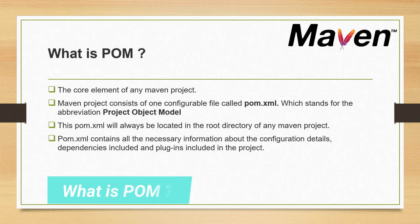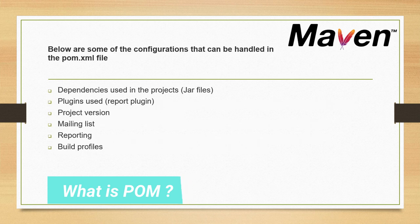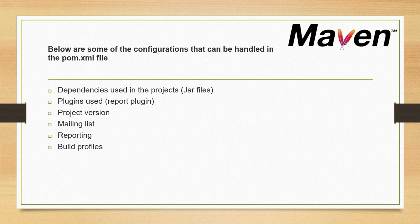If you look at the standard structure of a POM, it has many elements that we will see in the next slide. pom.xml can have various configurations like dependencies used in the projects. When I say dependencies, that may be any library or jar files.